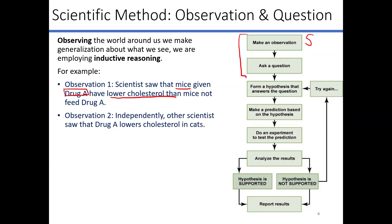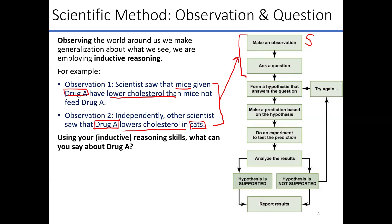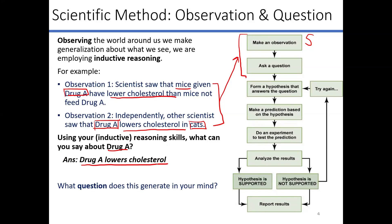Another example of an observation: independently, other scientists saw that drug A — that same drug given to our mice — is also lowering cholesterol in cats. So right there we have two great observations, noticing two separate things. Based on these observations, we can use our inductive reasoning skills to make a statement about drug A. Drug A is lowering cholesterol in mice, drug A is lowering cholesterol in cats — so we might safely say that drug A can lower cholesterol. And because we've made those inferences, we can go ahead and come up with our question.